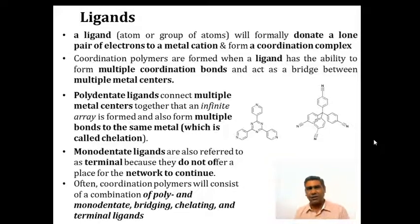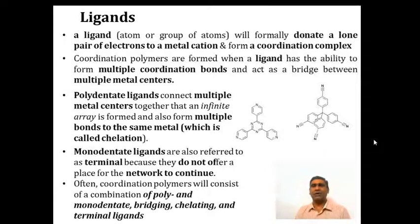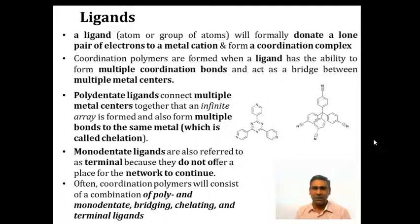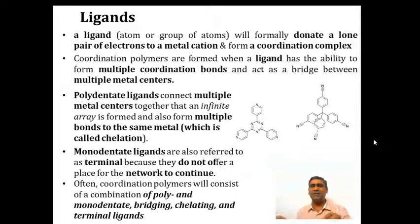What do we mean by a ligand? It is an atom or a group of atoms that formally donates a lone pair of electrons to a metal cation to form a coordination complex. For example, pyridine has a heteroatom nitrogen with a lone pair of electrons which it donates to a metal to form a coordination complex. These polymers are formed when a ligand has the ability to form multiple coordination bonds and act as a bridge between multiple metal centers, giving beautiful two-dimensional and three-dimensional polymeric structures.